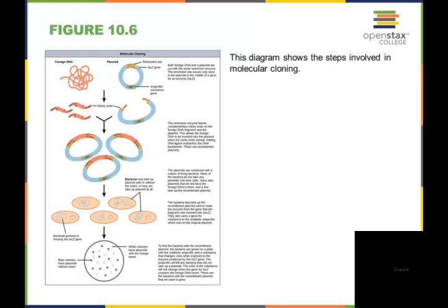The bacteria that take up the recombinant plasmid cannot make the enzyme from the gene that the fragment was inserted into, the LacZ, because you've cut the gene. They also carry a gene for resistance to the antibiotic ampicillin, which was on the original plasmid.